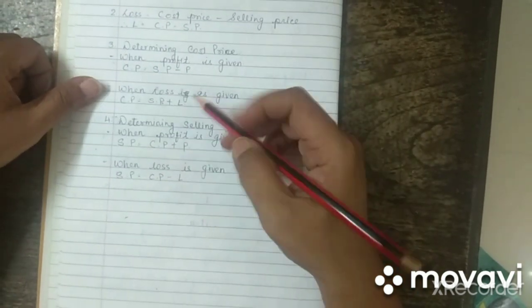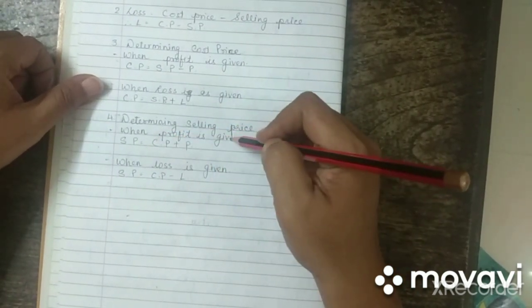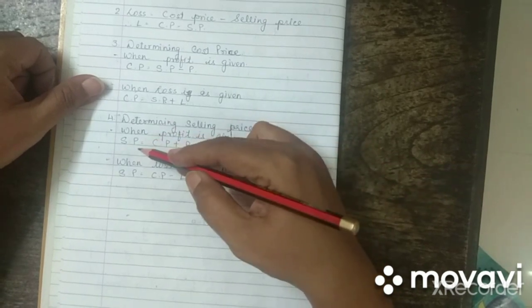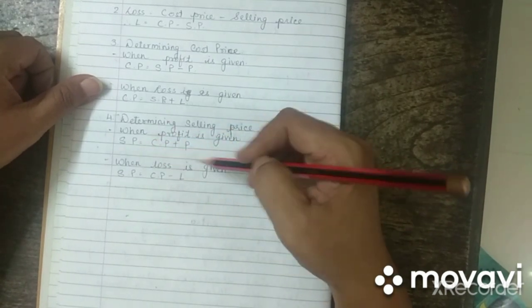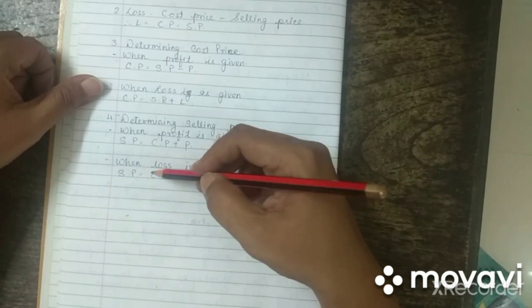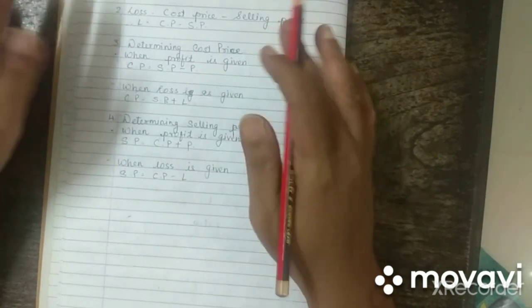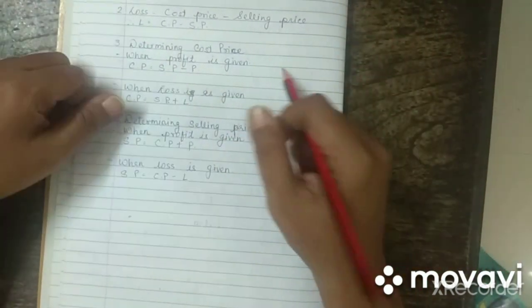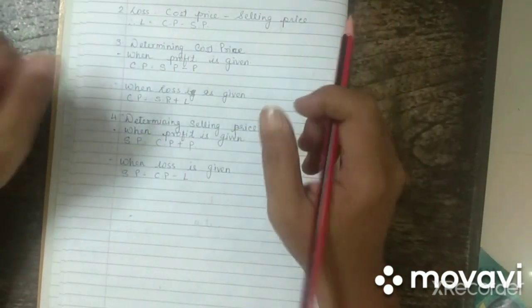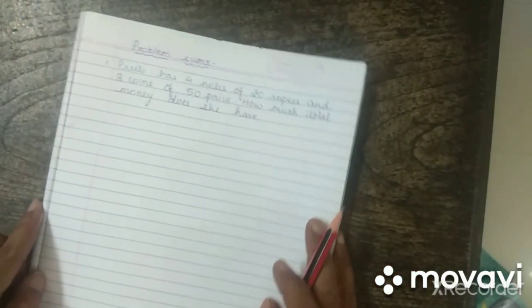To determine the selling price: when profit is given, Selling Price equals Cost Price plus Profit. When loss is given, Selling Price equals Cost Price minus Loss. These formulas will make more sense when you solve some sums. Now here is the first sum — let's try and solve it.